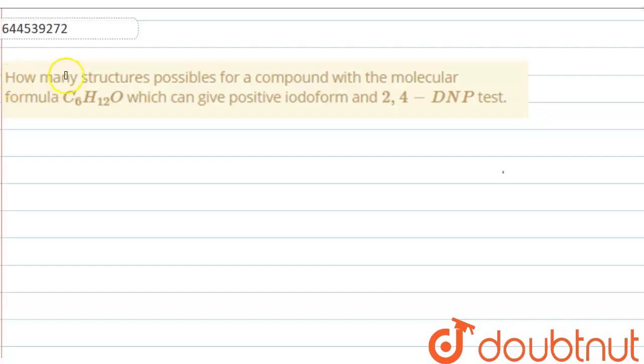So the given question says how many structures possible for a compound with the molecular formula C6H12O which can give positive iodoform and 2,4 DNP tests.